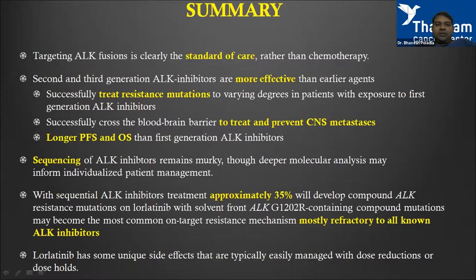In summary: targeting ALK fusion is clearly the standard of care, and mutation analysis must be performed for all patients. Second and third generation TKIs are more effective, covering resistant mutations and treating/preventing CNS metastasis with longer PFS and OS. Sequencing is complex — approximately 35 percent of patients will acquire compound ALK mutations on lorlatinib, and a large number may become refractory to all known ALK inhibitors.